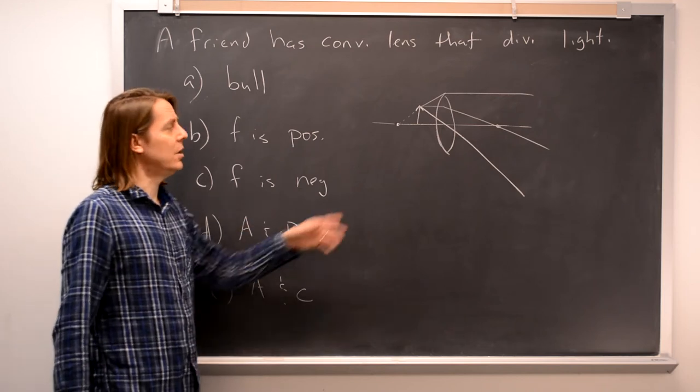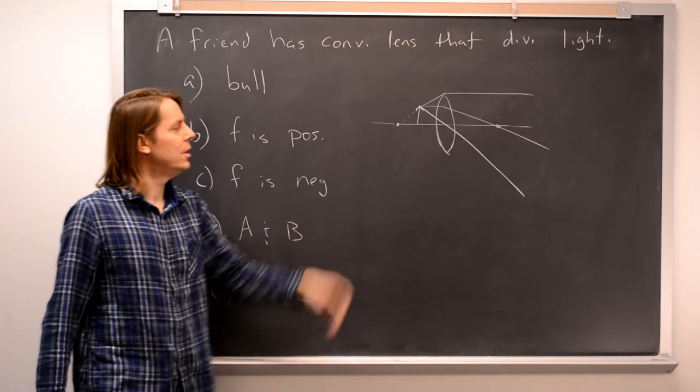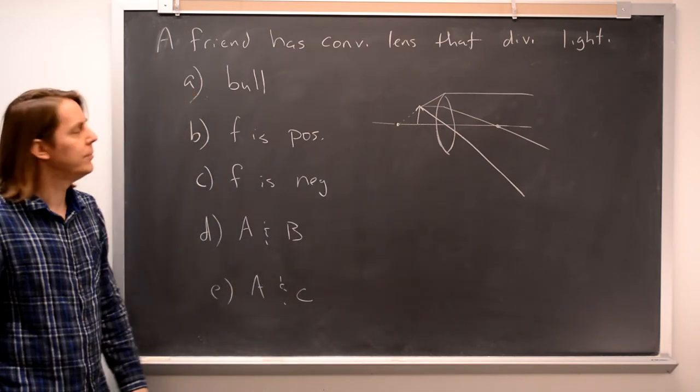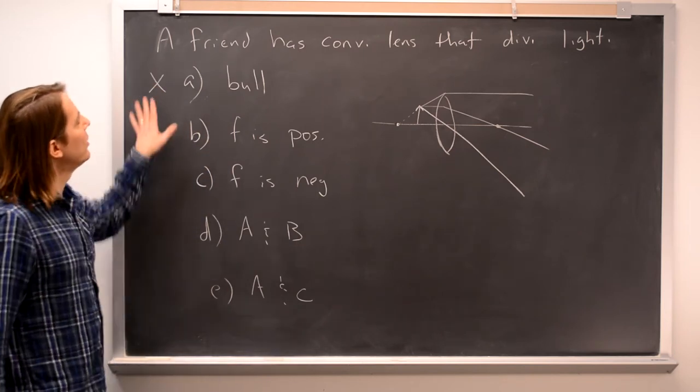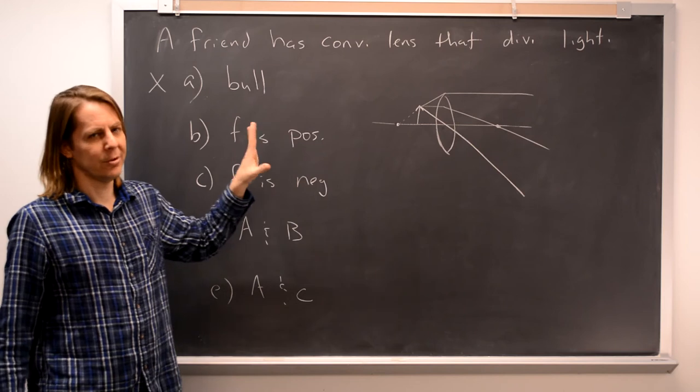So a converging lens can diverge light if you put the source of the light or the object really close to it. So this actually is not true. Although I would say this may not be a friend you should study with because it's a little weird.